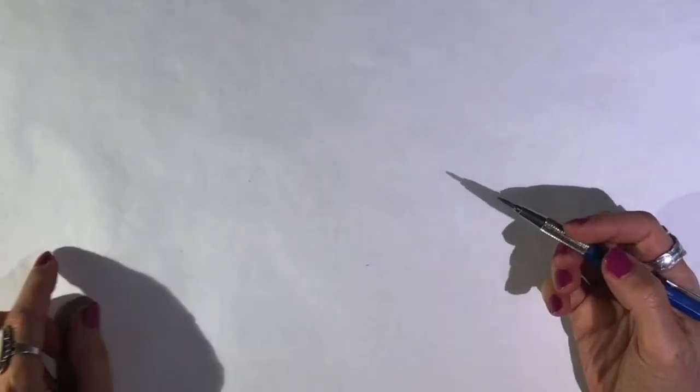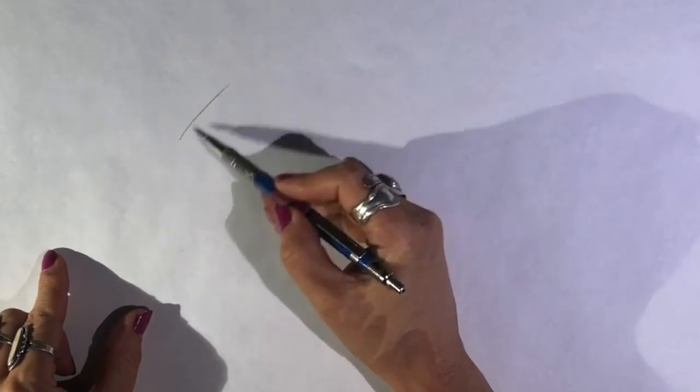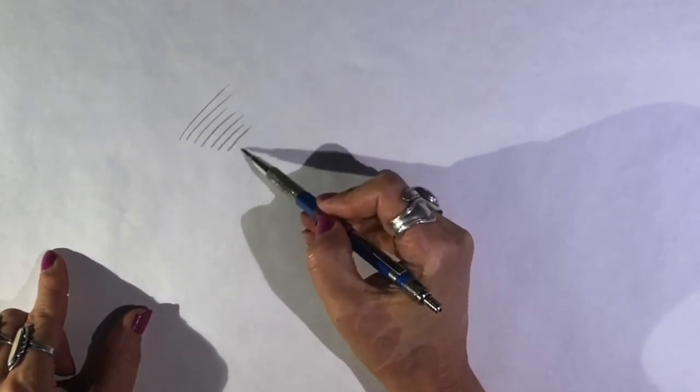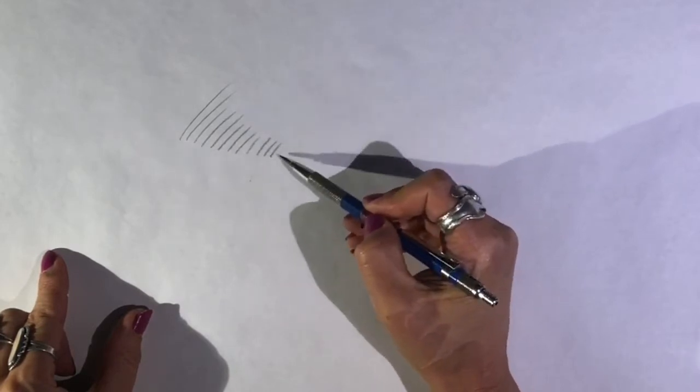I'm going to be doing a hatching warm-up exercise with my 4B pencil. The first thing we're going to do is make a set of parallel lines about an eighth inch apart. Try to keep them even.